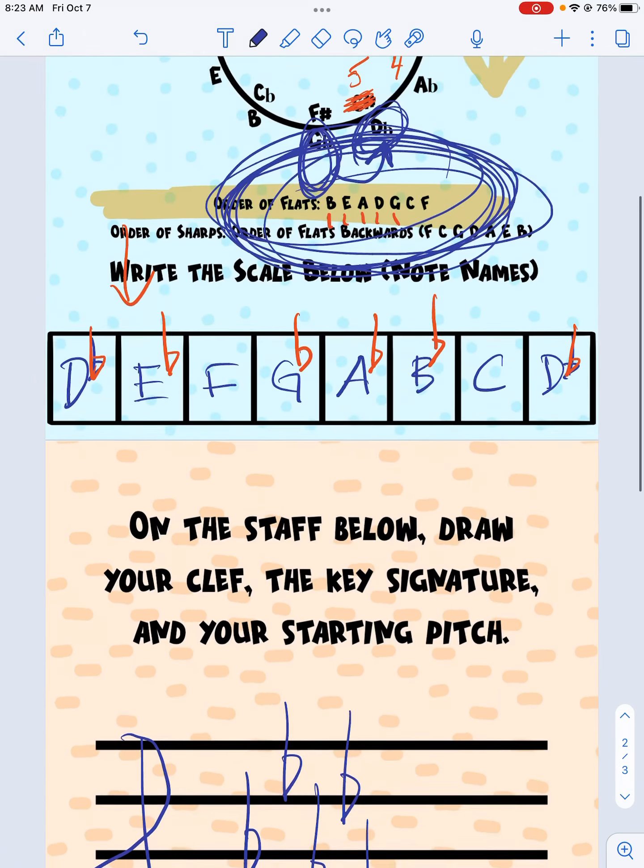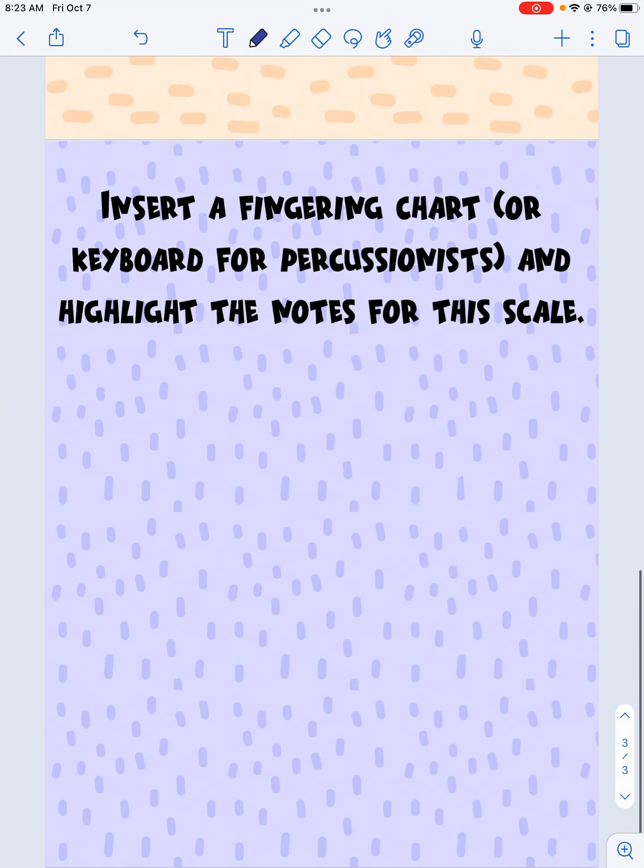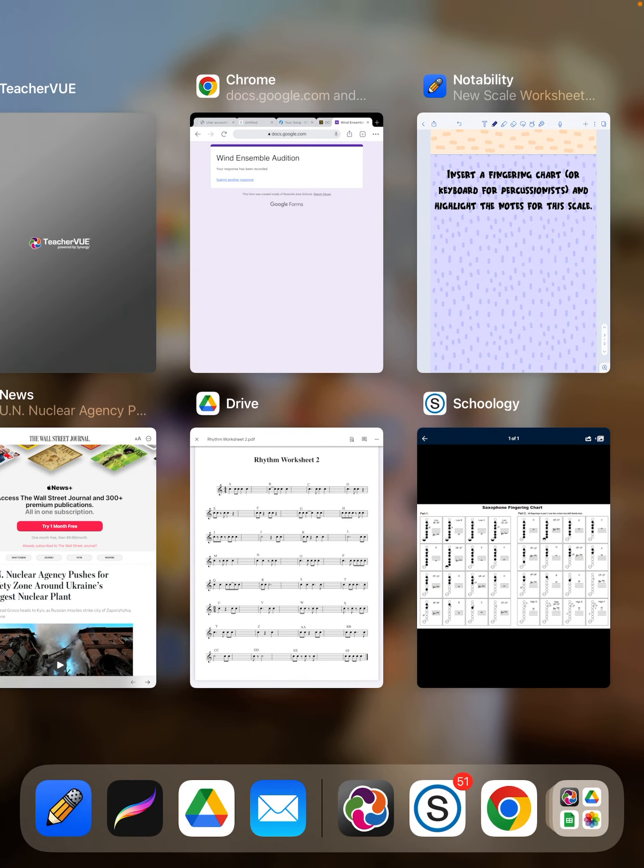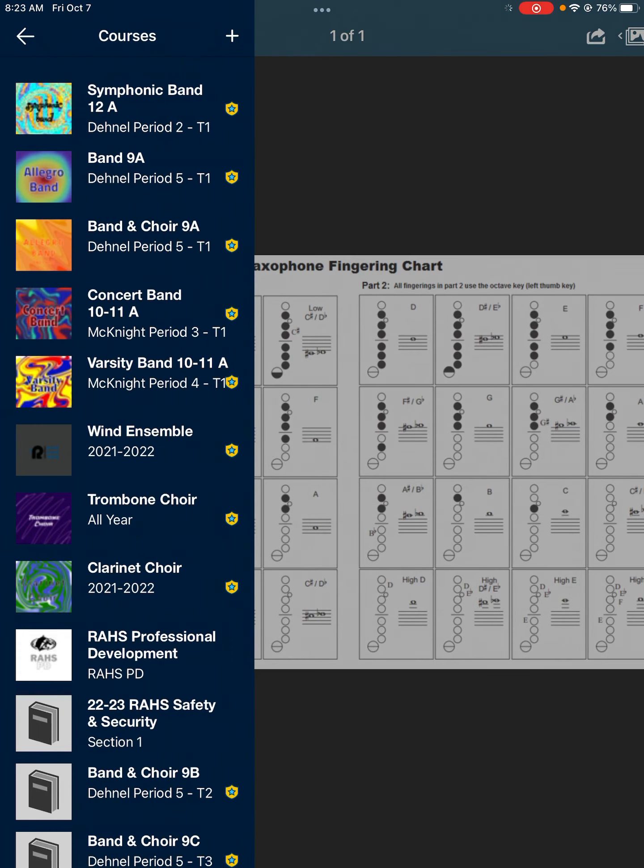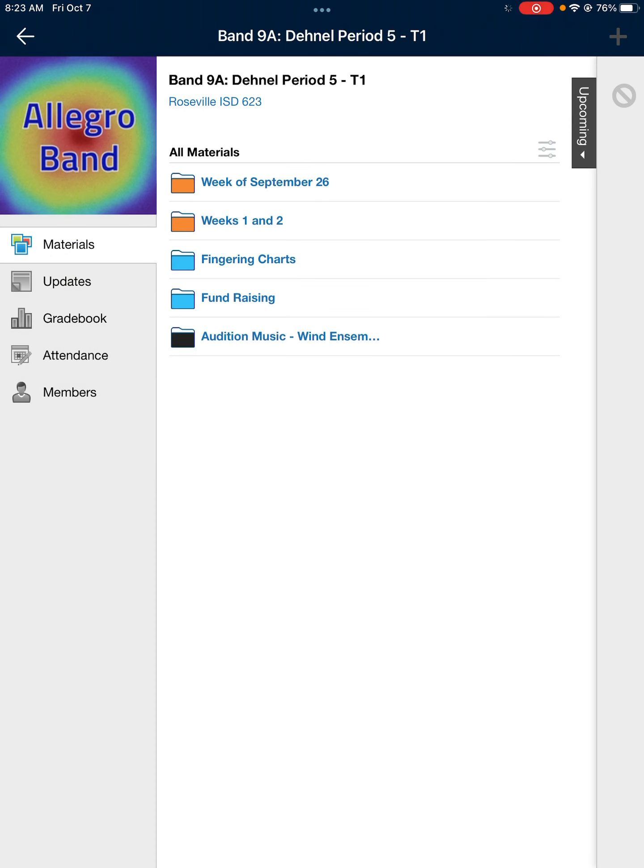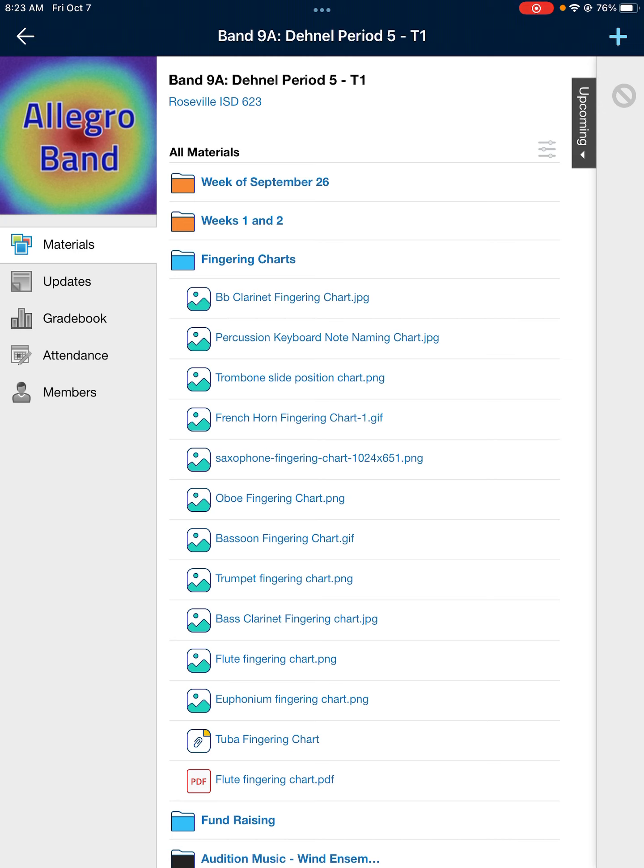So now I know key signature. I know letter names of notes. I know my starting pitch. So I'm ready to grab a fingering chart and figure this scale out. You can go Schoology or you can go to the Google machine. I'd probably go Google machine because some of these fingering charts are weird. And I find my fingering chart.